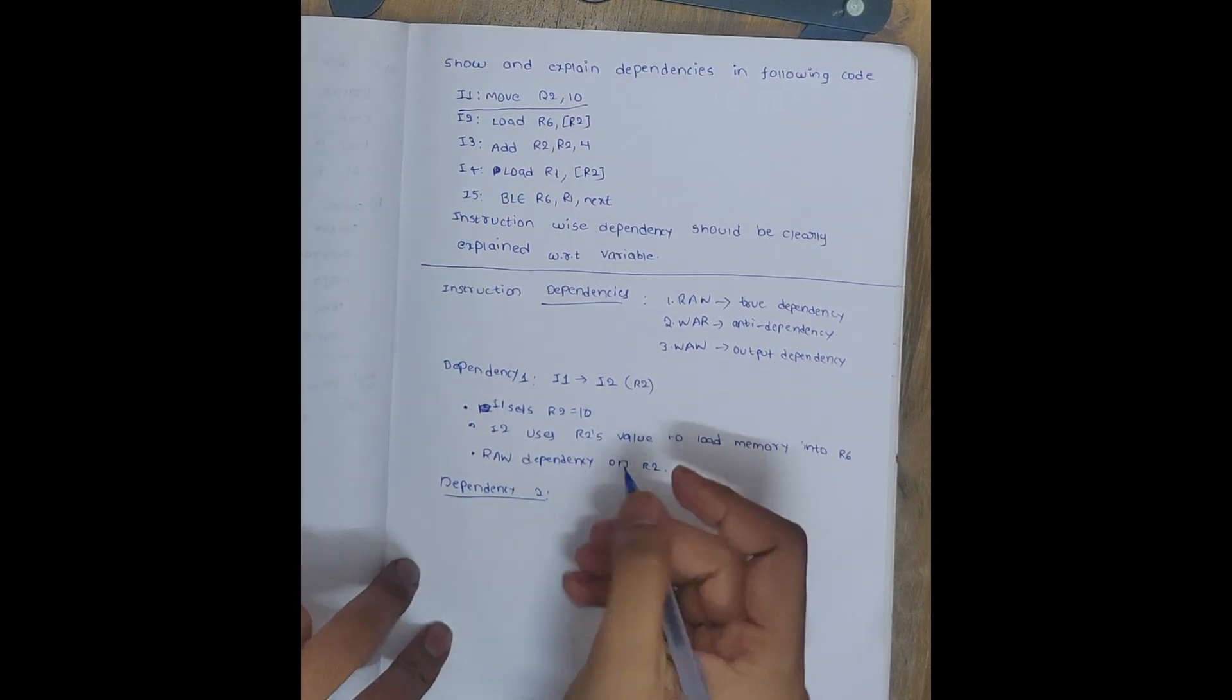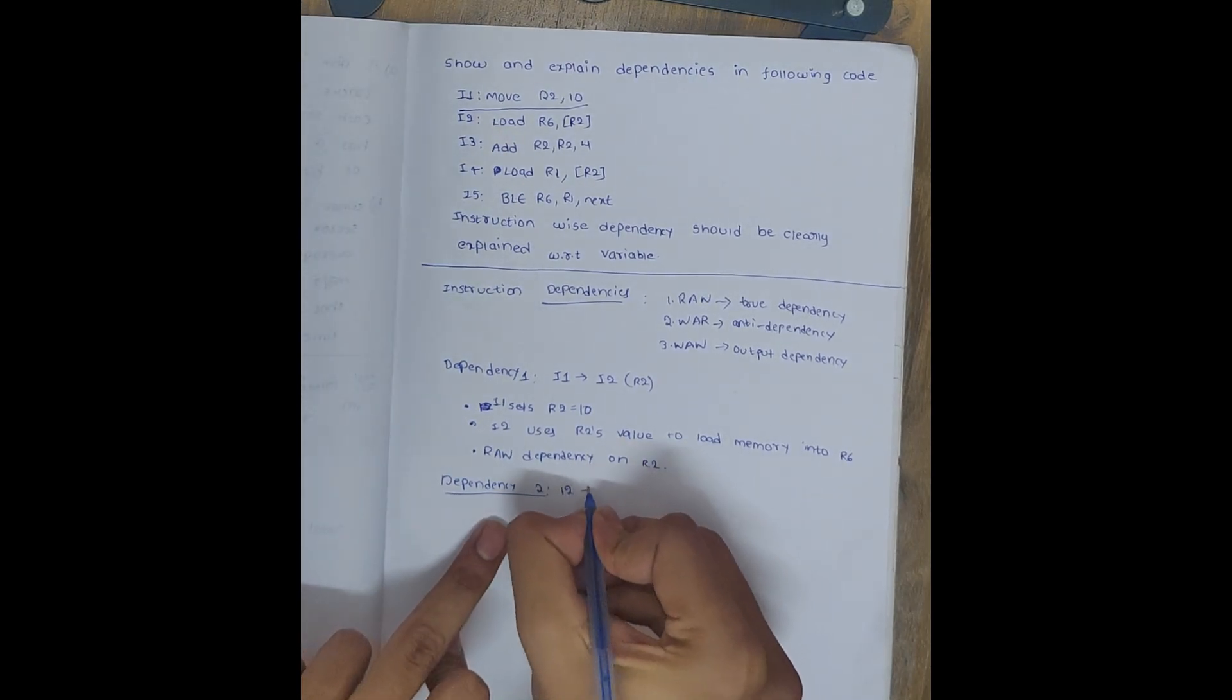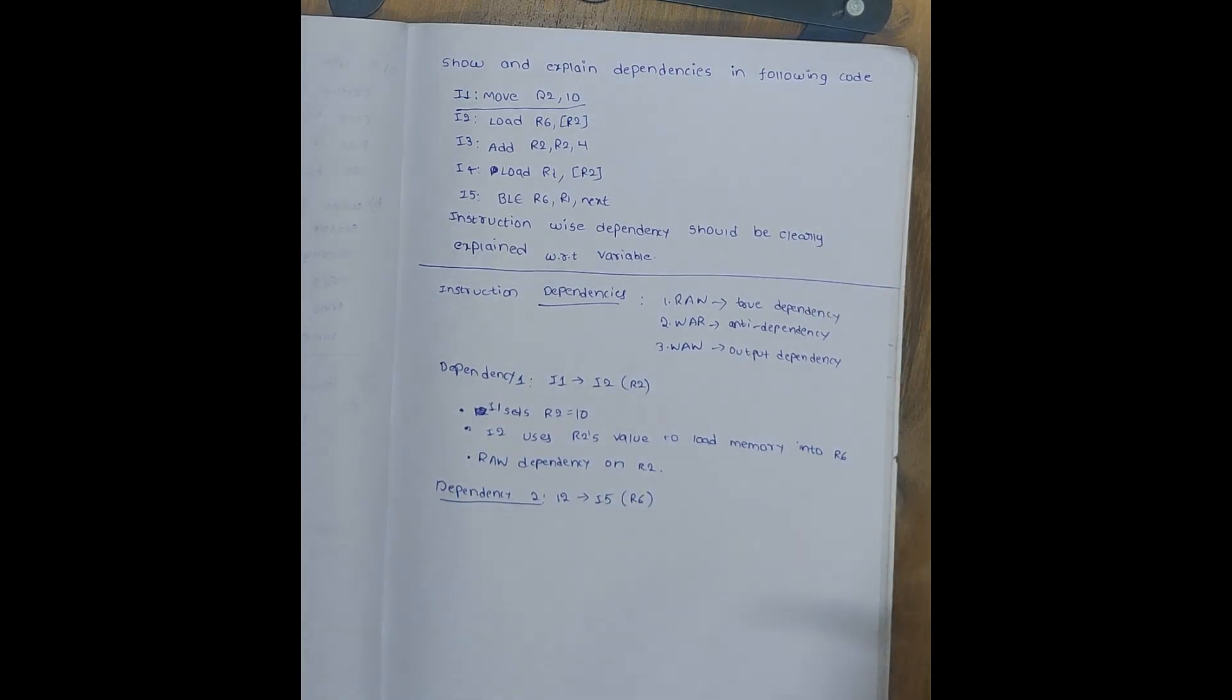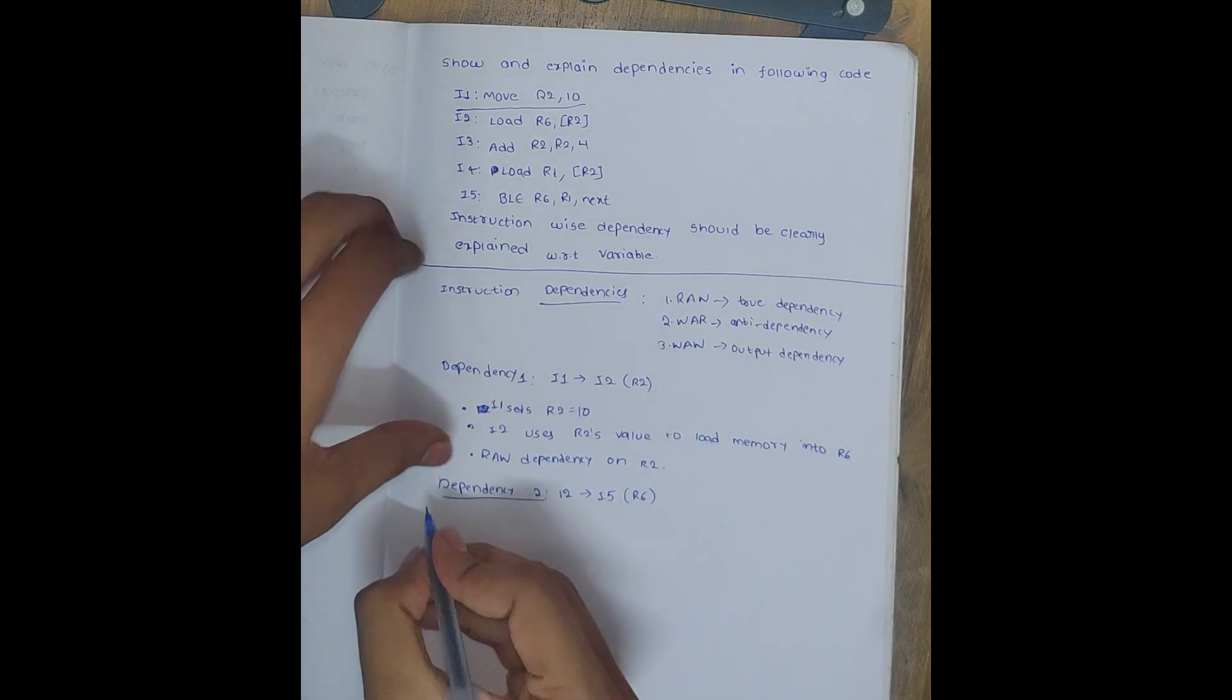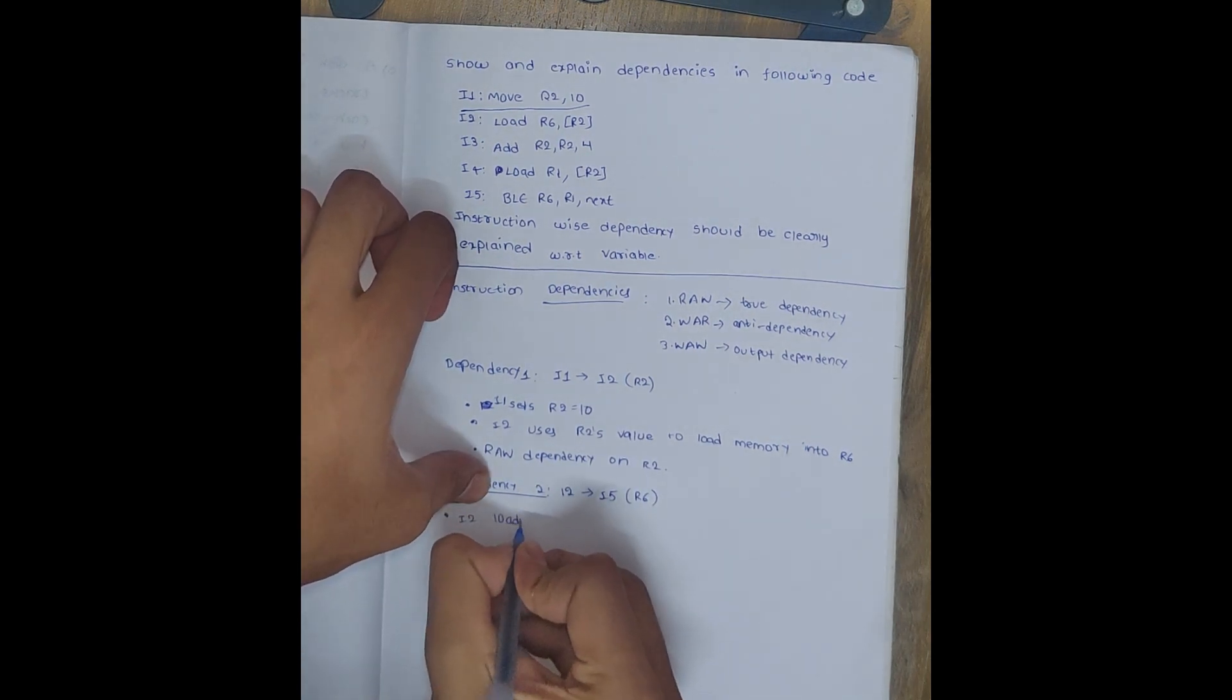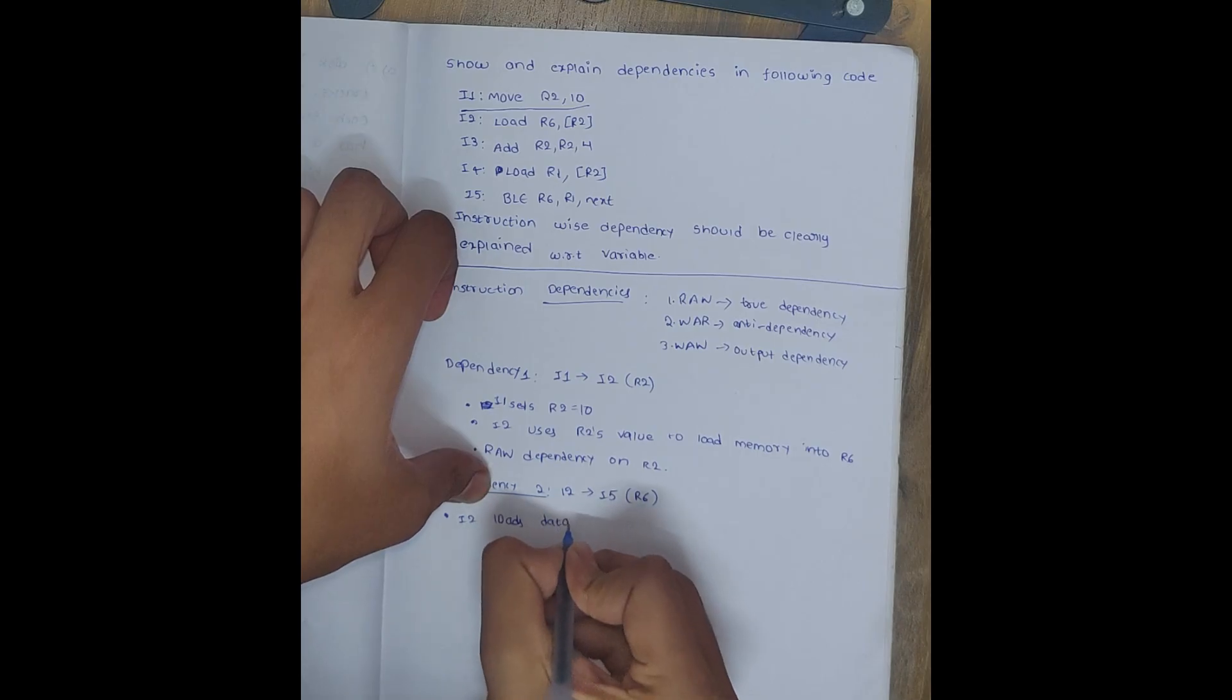It is on R6. How is it working? Let me see. So first of all, I2 loads R6, right? I2 loads data into R6. Done.